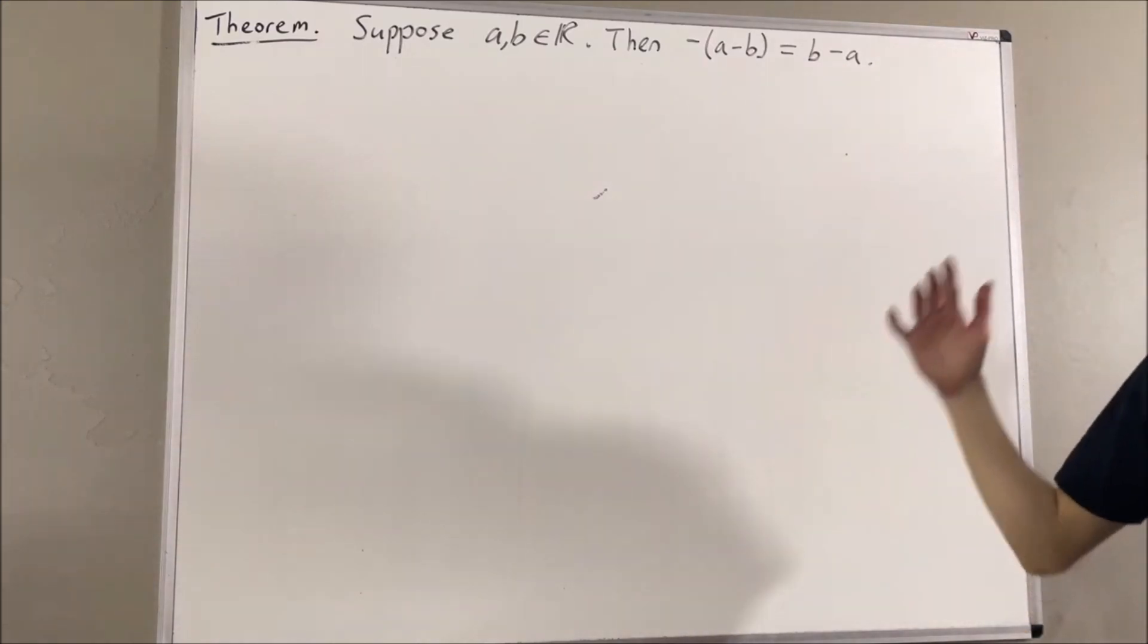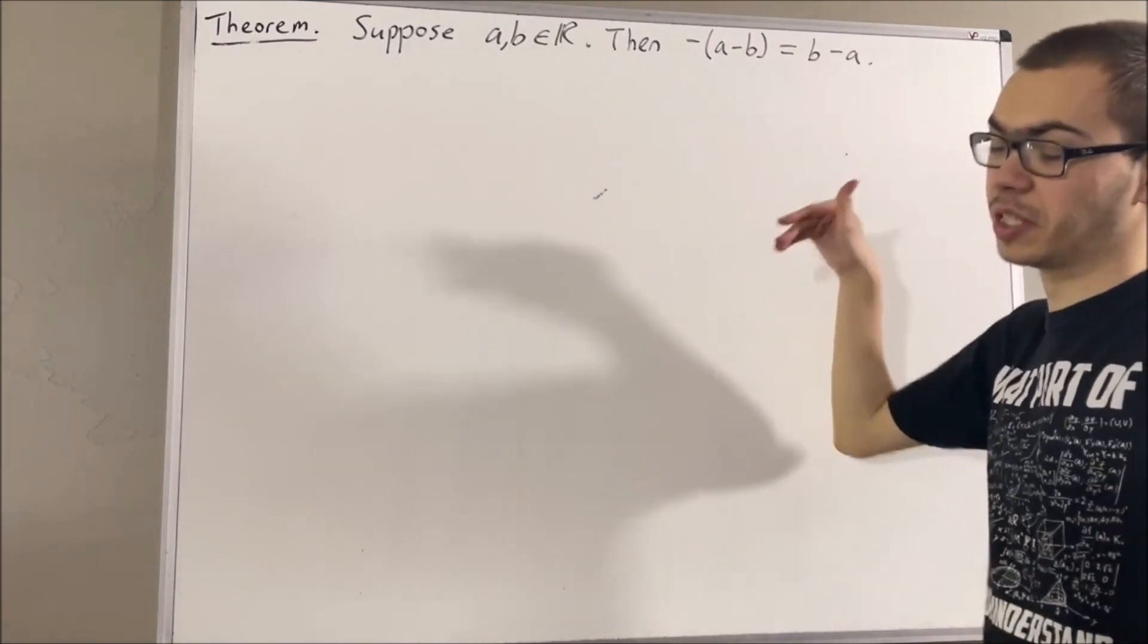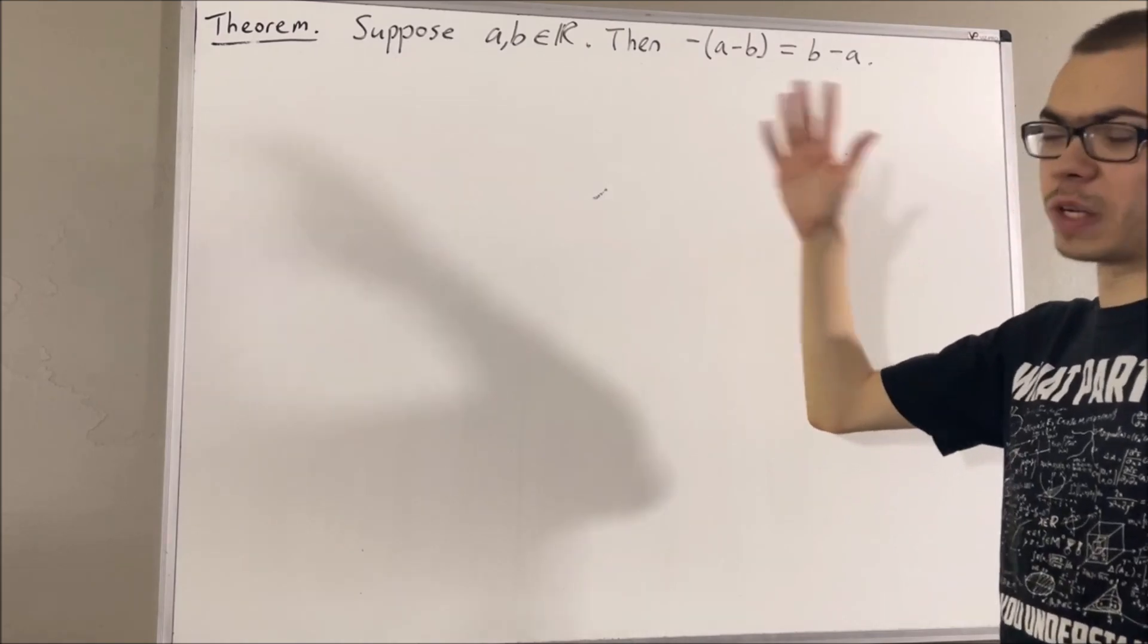Now in this series, we are using a list of 10 axioms for the real number system, and I'll leave that list of axioms in the description below. Now in this video, we are going to be using the following axioms.